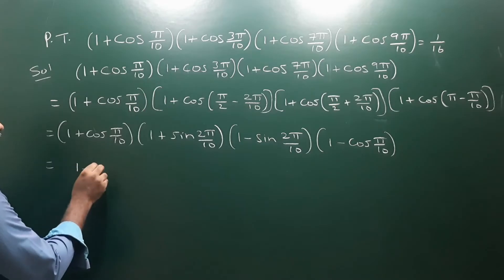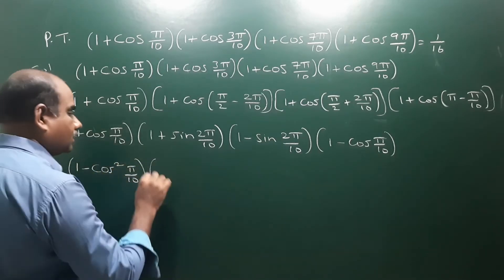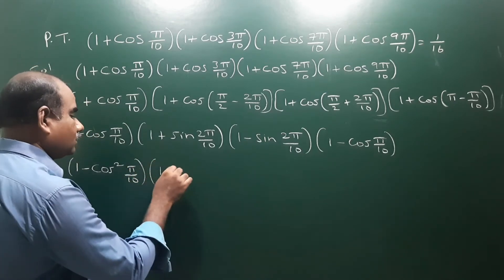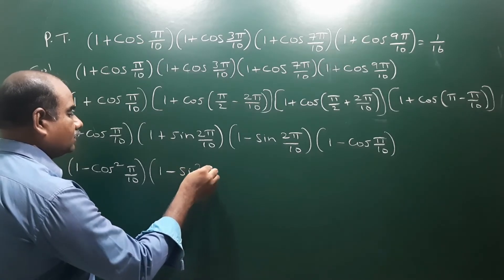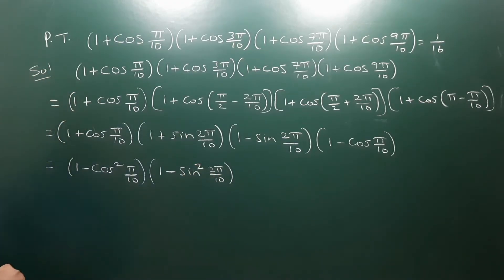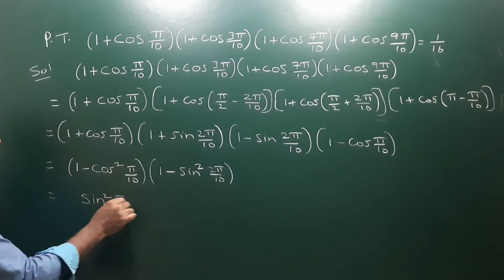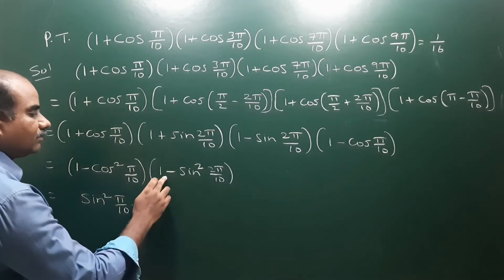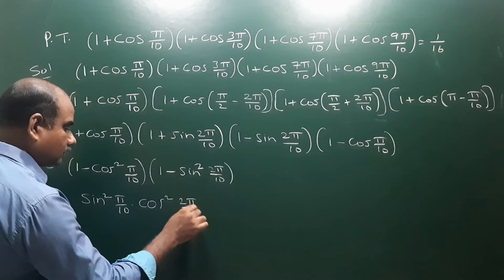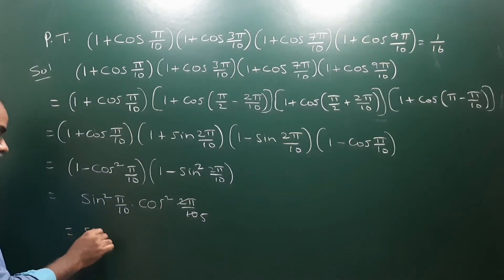Applying the formula: (1 + cos π/10)(1 − cos π/10) = 1 − cos² π/10. And (1 + sin θ)(1 − sin θ) = 1 − sin² θ = 1 − sin²(2π/10). Now 1 − cos² θ = sin² θ, so the first pair gives sin²(π/10) = sin² 18°. The second pair gives 1 − sin² θ = cos² θ = cos²(2π/10).